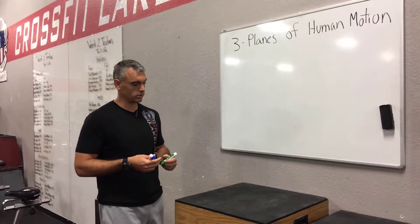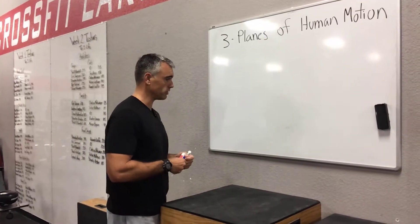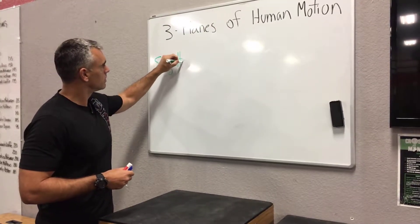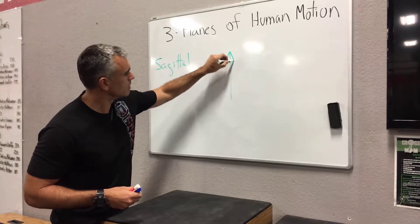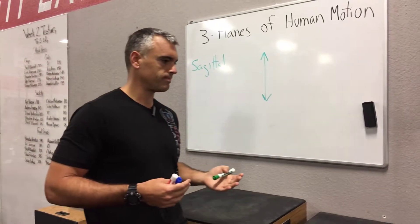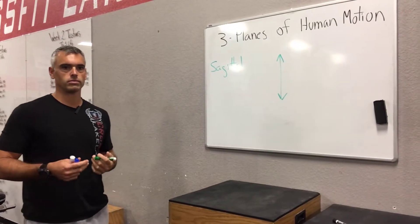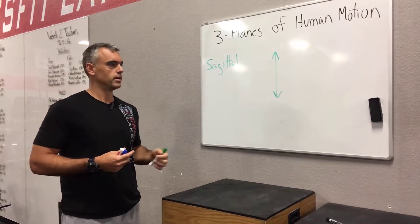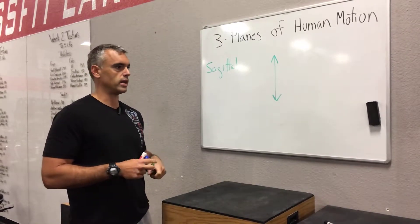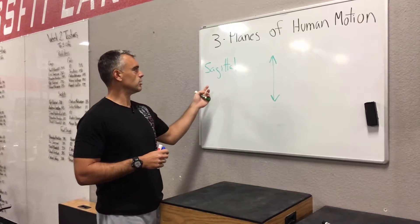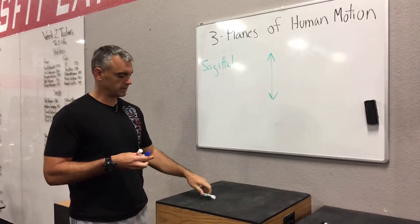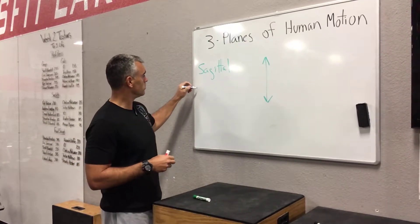The first plane is the sagittal plane — think forward and backwards. So walking forward, walking backwards, or running forward and jogging backwards — that's the sagittal plane. Exercises associated with it include forward lunging, squatting, and forward step-ups. Predominantly a lot of the stuff in the CrossFit world is going to be sagittal plane.